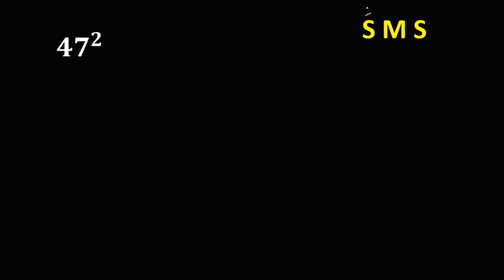So we have this given: 47 squared. To solve using the SMS method, the first S stands for the square of the first digit. So the square of 4 is 16.